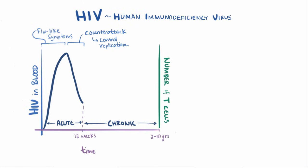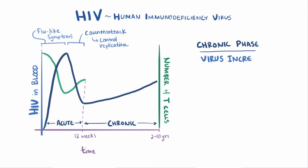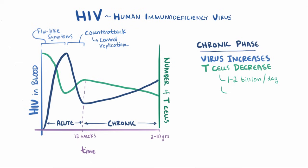If we plot the amount of T cells alongside the amount of virus, we'll see that they loosely mirror each other. Initially there is a considerable decline in the acute phase until the immune system mounts its counterattack. Even though there might not be any clinical signs or symptoms of the virus, the virus is steadily chipping away at the immune system, and the number of viruses in the blood slowly increases while T cells slowly decrease, losing about 1–2 billion T cells every day. During this chronic phase, T cell counts usually remain above 500 cells per cubic millimeter, and patients can still fight off other infections fairly well, although some infections like tuberculosis become more common and severe.